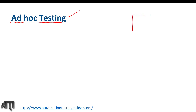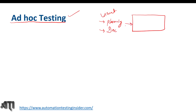When we test any application without proper planning or documentation, that is nothing but ad hoc testing. Since we don't create any plan or go for any documentation, this is also called informal testing or unstructured type of software testing. In ad hoc testing, we should have some prior knowledge about the application, then only we can do the testing.